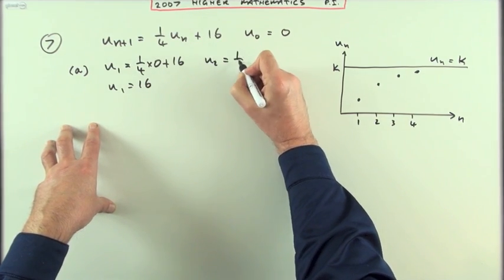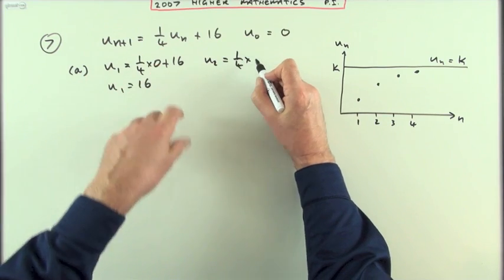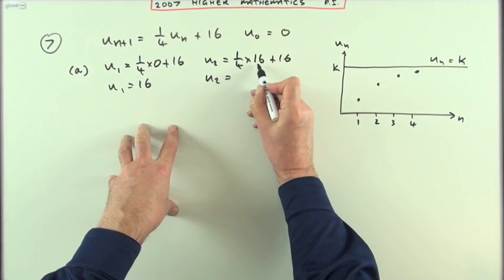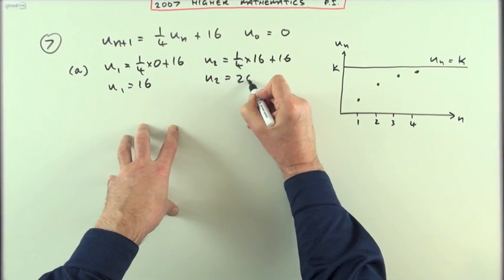U2 will be a quarter of the one before it. The one before it was 16. So U2 is going to be a quarter of 16, which is 4, plus 16 is 20.